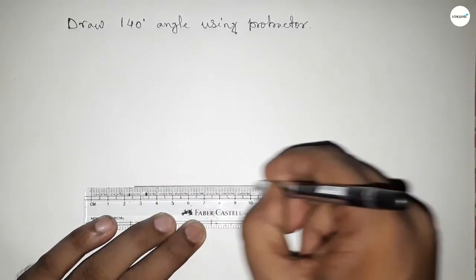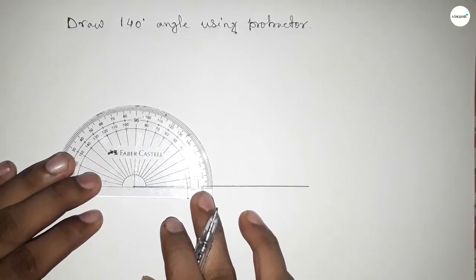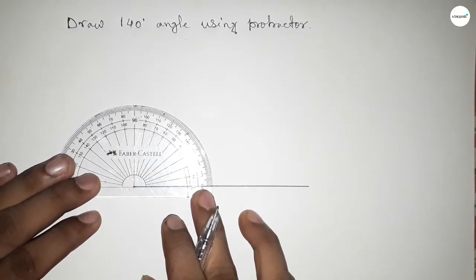Draw a line here of any length. Okay, now pointing here to draw 140-degree angle. Now putting the protractor on the line perfectly.